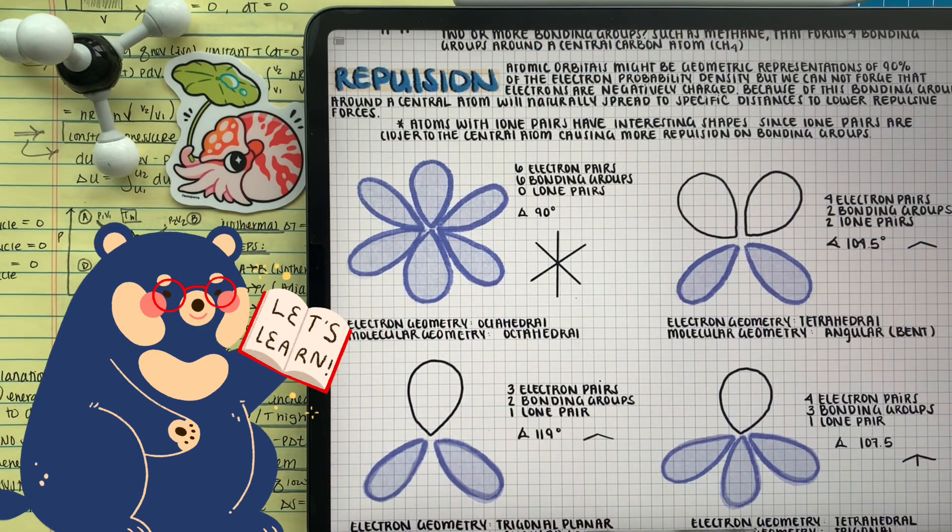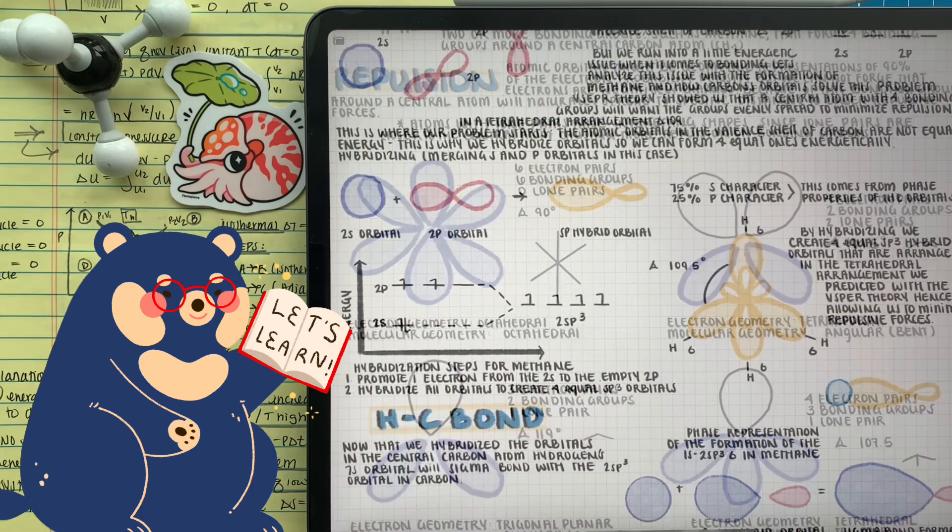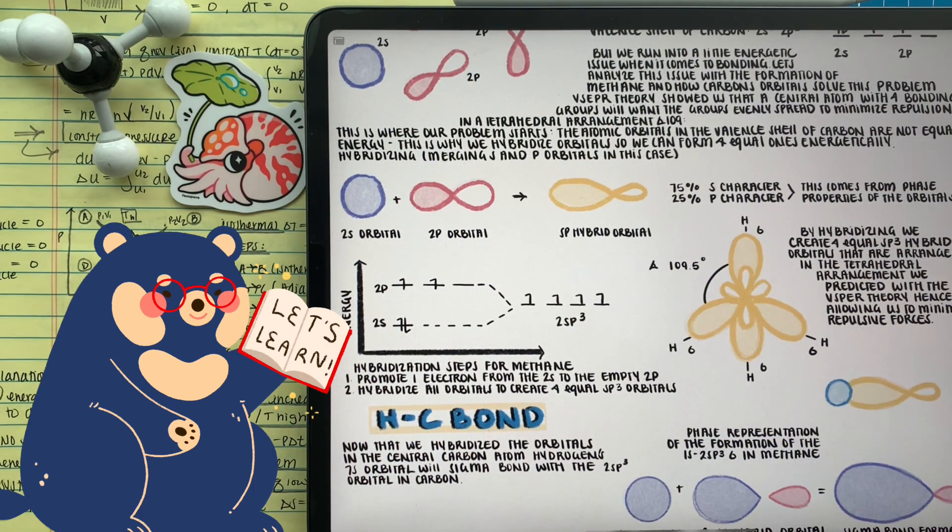And how the VSEPR model might just be more theoretical to lower repulsion of electron groups, atoms really do hybridize to have equal bonding orbitals of the same energetics and to minimize repulsion. In this case of a carbon connected to four different things, we're going to all hybridize four equal orbitals, all four being sp3 hybridized.